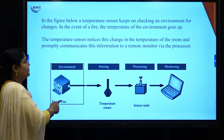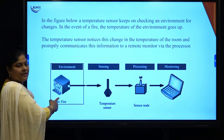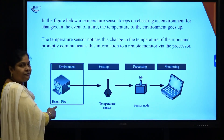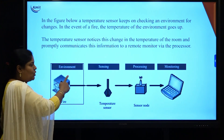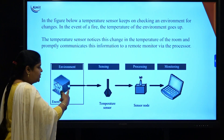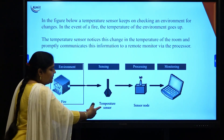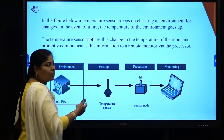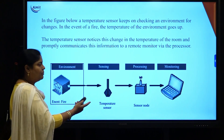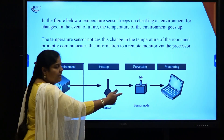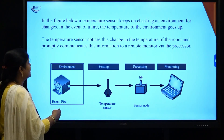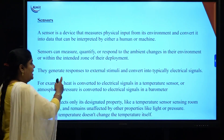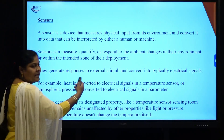Looking at this diagram, we can understand better. This shows an environment in which a temperature sensor has been placed. The temperature sensor continuously checks the temperature levels. Suppose there is a fire — because of the fire, the temperature goes up. Whenever there is such a change, stimuli are generated by sensing. The temperature sensor detects the high temperature, processes the data, and the output is displayed on the monitor. If the internet is connected to a monitor or mobile phone, what action is to be taken will be displayed accordingly. External stimuli means if there is a change in the environment, the sensor reacts accordingly.